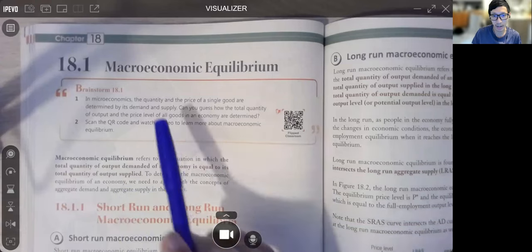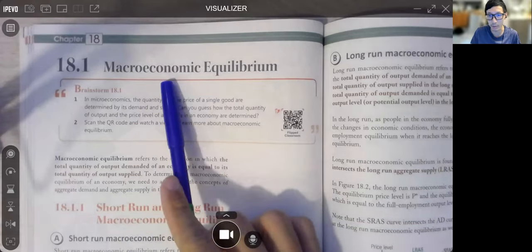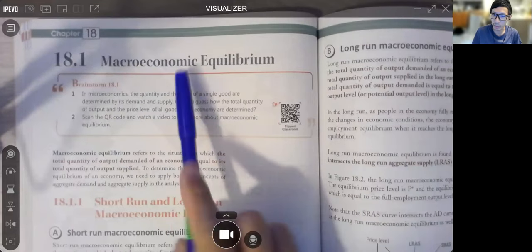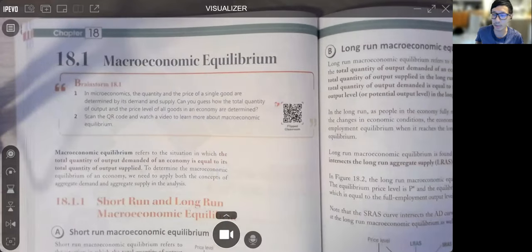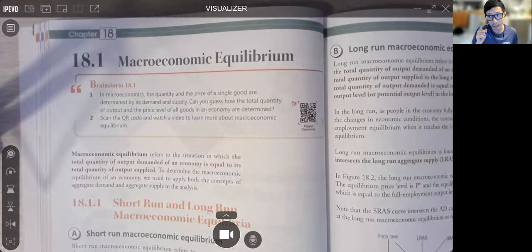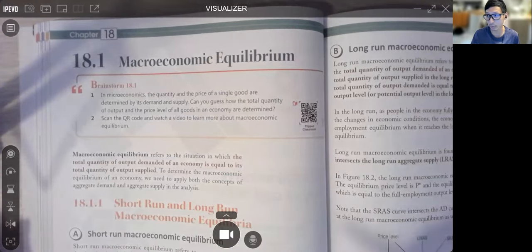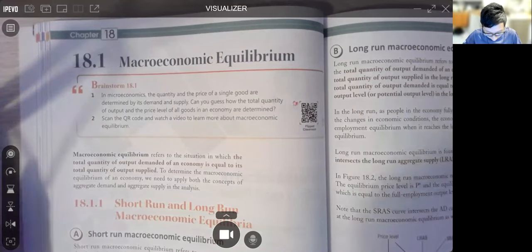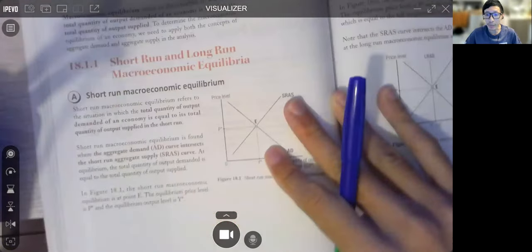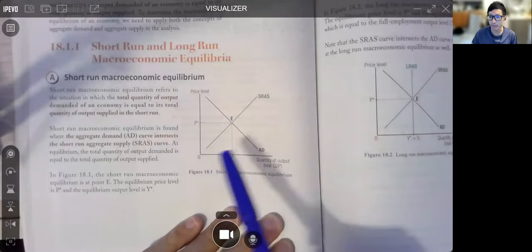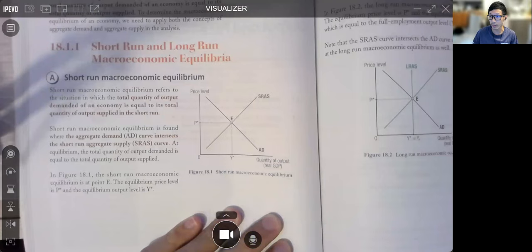This chapter specifically, we talk about the intersection of AD and AS. We call that Macroeconomics Equilibrium or Equilibria. If you remember, in demand supply, it's very simple. Basically, we have demand, supply, and then we have Equilibrium. ADAS is the same.